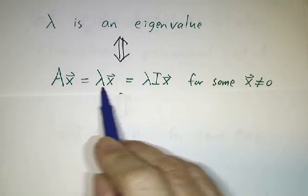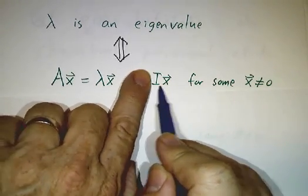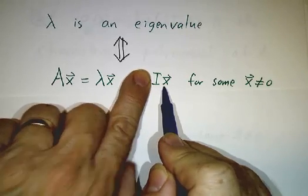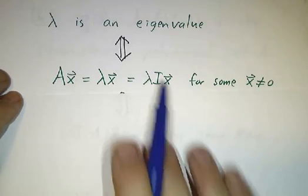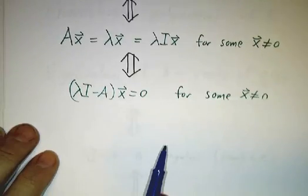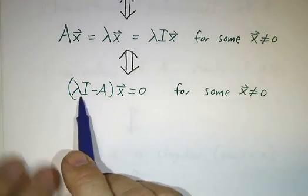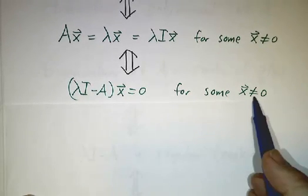And another way to write lambda x is lambda times the identity matrix times x, because of course, the identity matrix times x is just x. Okay, well if we can do that, then we can put the lambda times the identity on the other side of the equation, and we can write lambda times the identity minus A times x is 0 for some non-zero x.